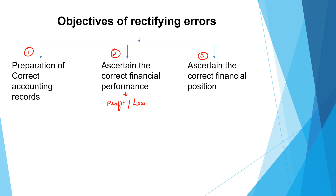Third, we need to show the correct financial position. Financial position refers to the value of the assets and liabilities disclosed in the balance sheet. If there are errors in respect of these assets and liabilities and the values shown are wrong, then the financial position presented is not the correct one. So we need to identify the errors, see how to rectify them, and pass rectification entries to remove the errors from the accounting records, so we are ultimately able to prepare financial statements that give a true and fair view of the financial performance and financial position of the business.